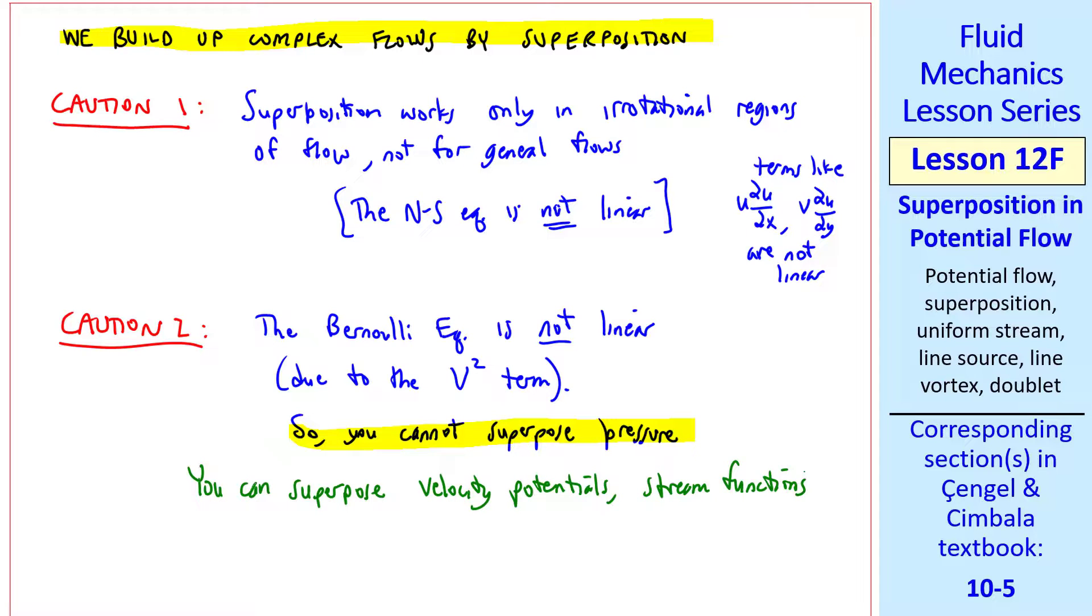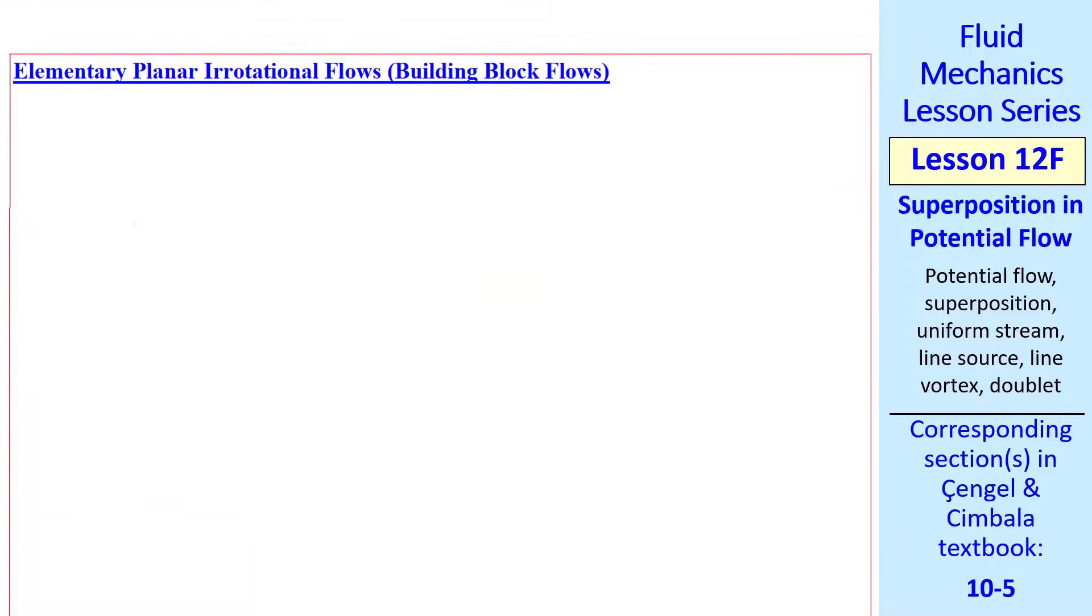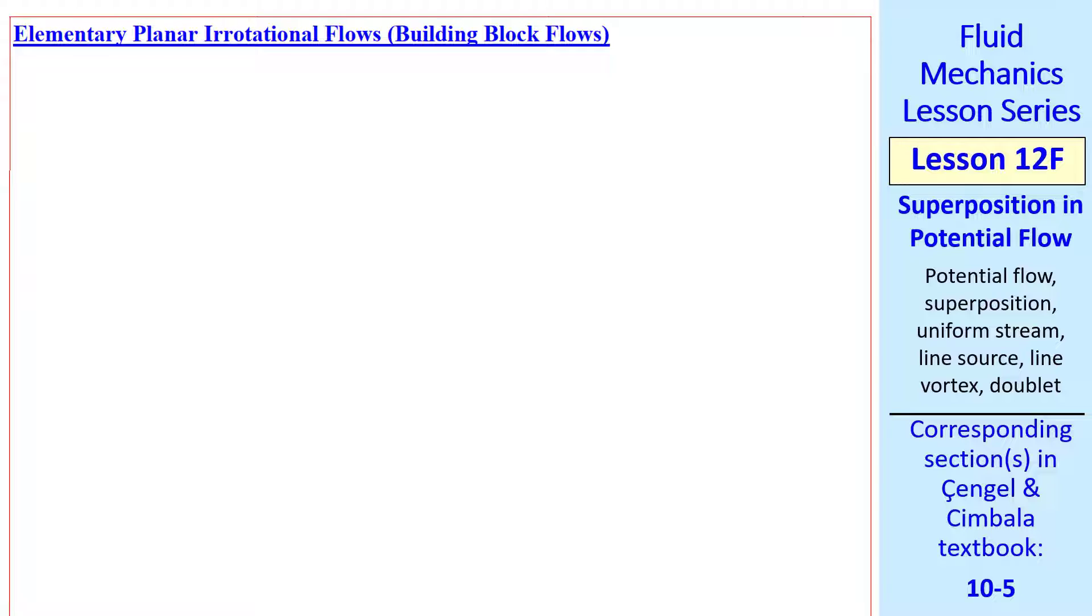You can superpose velocity potentials and stream functions, and velocities, since velocity comes from differentiating one of these. But to get pressure, you have to calculate the velocity, and then get the magnitude squared, and use the most beloved Bernoulli equation to find pressure. Now I'll define some elementary planar irrotational flows, which I like to call building block flows. With these, we can build up, or superpose, other flows.